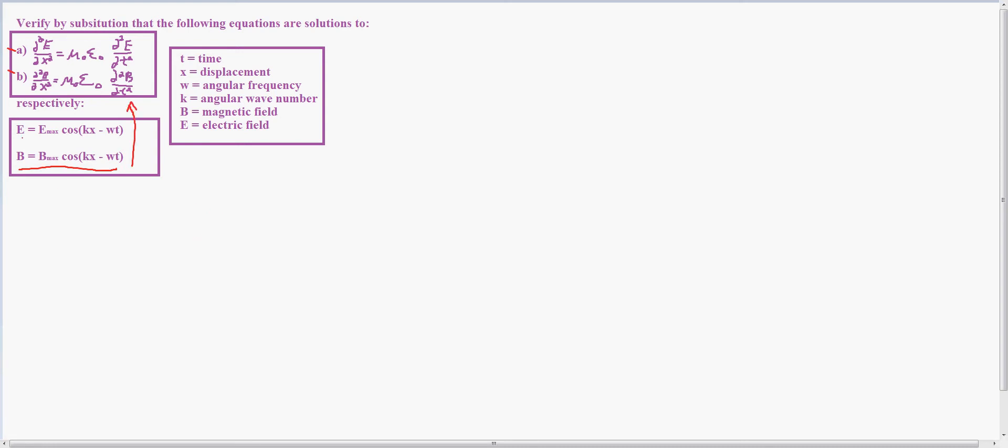So what I did is I used the E equation, the first one, and I took the partial derivative of the electric field in terms of x, and that's equal to negative k E max sine kx minus angular velocity times t.